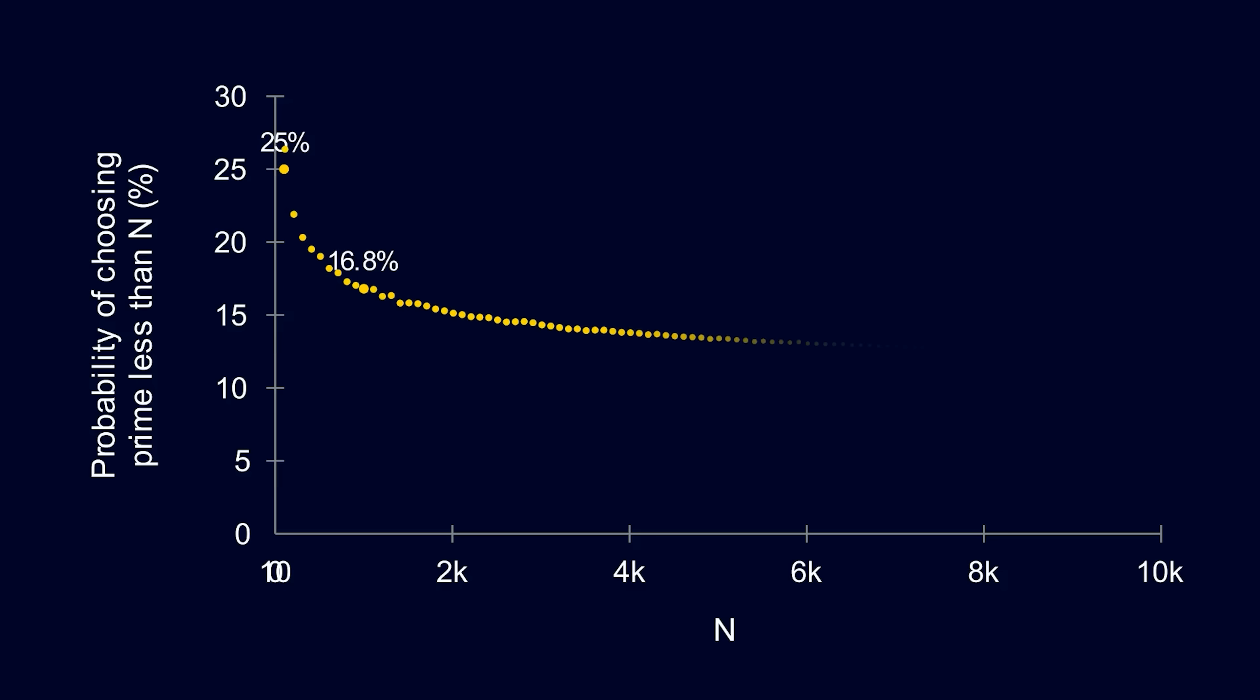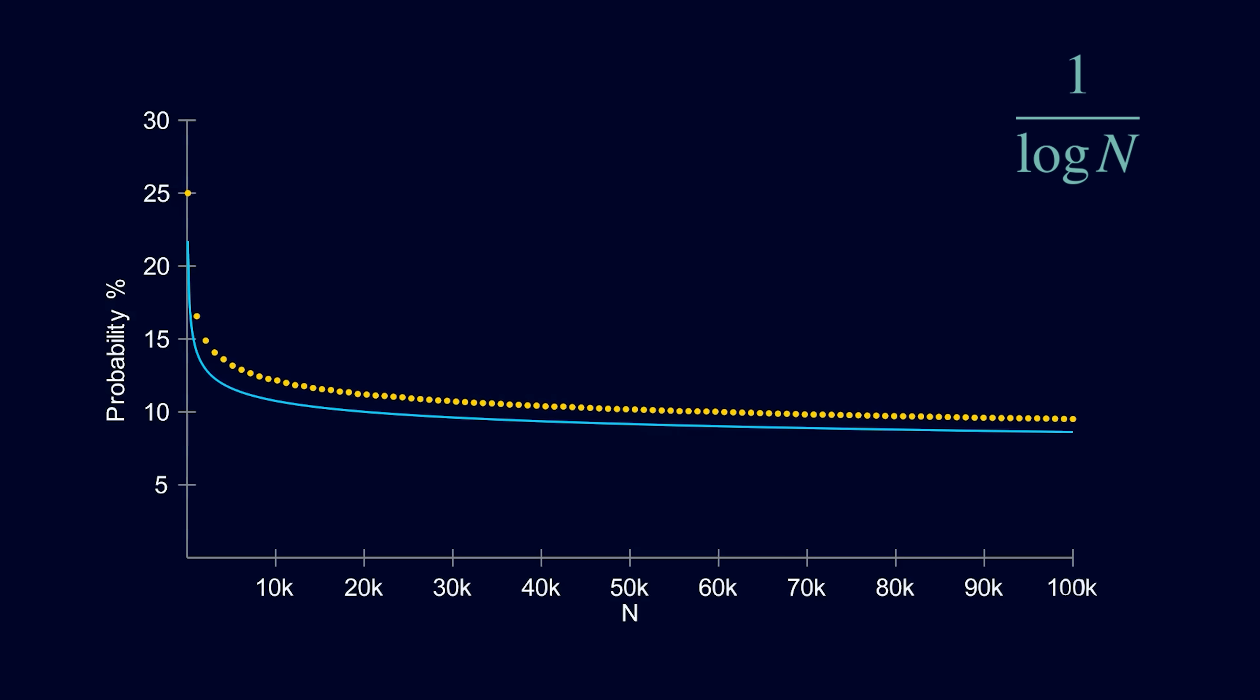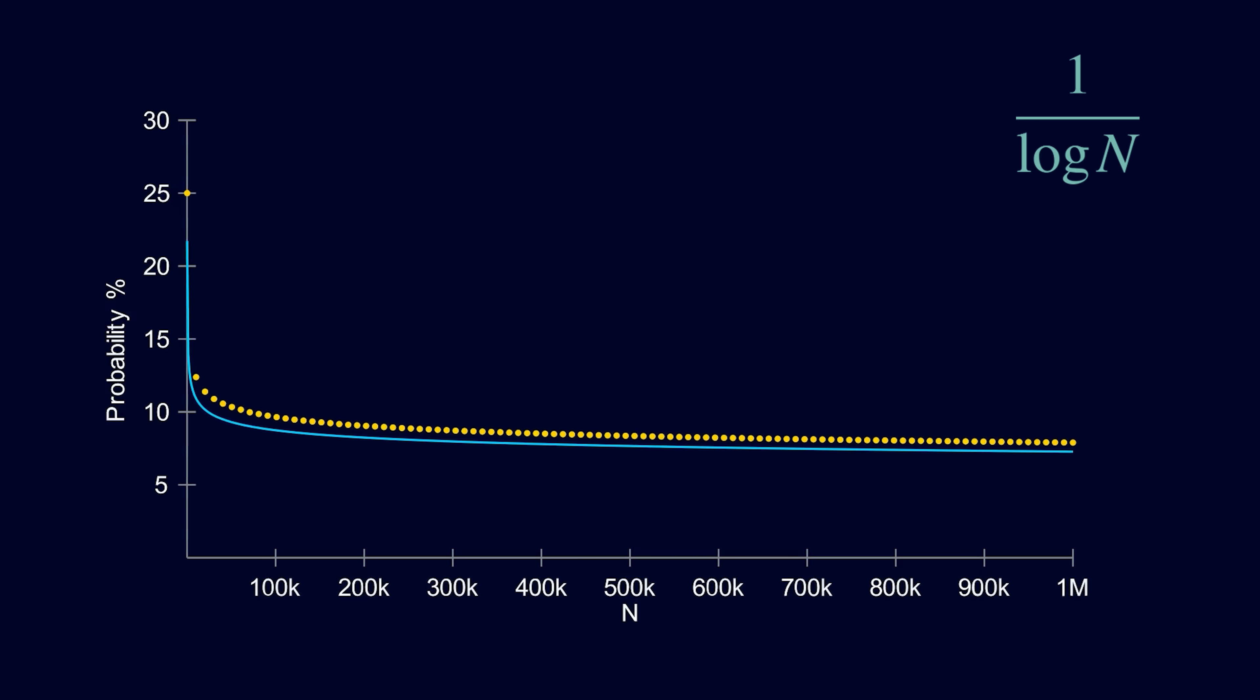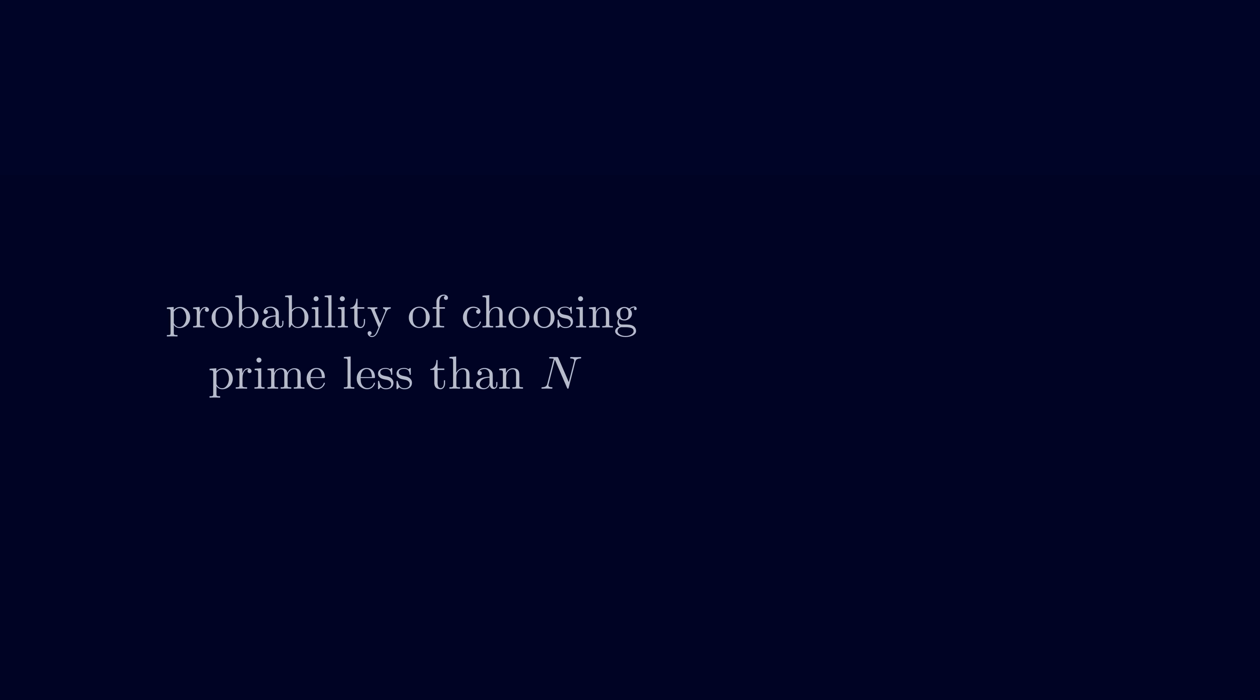Now, is there a nice function that approximates this scatterplot? This is the function 1 over log n. As we consider larger and larger values of n on the x-axis, the graph of 1 over log n hugs the points more tightly. So it seems that the probability of choosing a prime less than n is approximately 1 divided by log n.